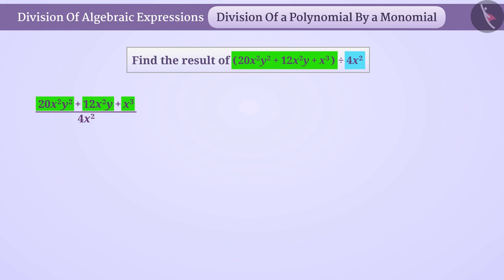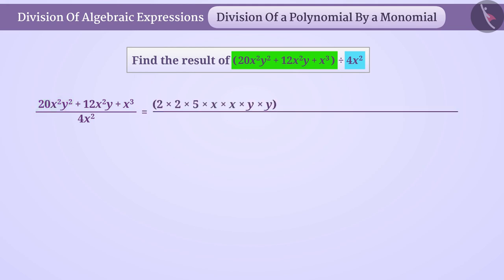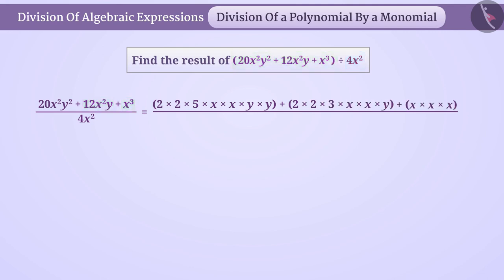The factorization of 20x squared y squared can be done like this, and 12x squared y and x cubed can be done like this as well. Similarly, we will also write the factors of the denominator — here 4x squared can be written out in factored form.